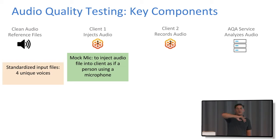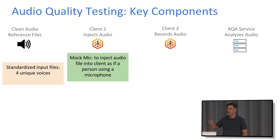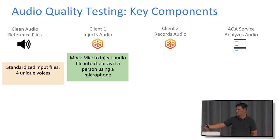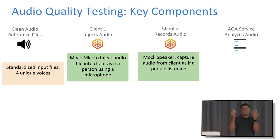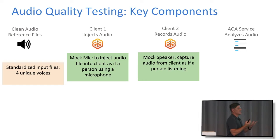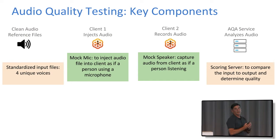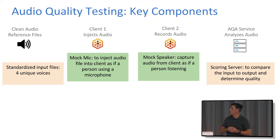Now we have a known input file going into the product, sending it through the conference bridge and bringing it out the other side. We have a client on the other side started with automation, and audio arrives there. A mock speaker captures that and pulls it into something like a WAV file or a RAW file. Now we're sitting with two files — one's a known good, one's an unknown — and we need a way to analyze them. Is this good or not? Have we improved or at least not regressed on quality? The audio quality analysis service is what we came up with.